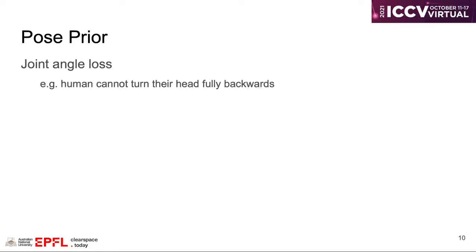Our pose-prior consists of two parts. The first part is called joint angle loss. Humans are highly constrained by our biological structure. For example, we cannot turn our head fully backwards.